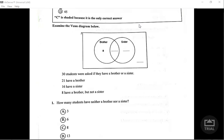Eight have a brother but not a sister. The question says how many students have neither a brother nor a sister, so they want to find right over here. Let's get ready to rumble.